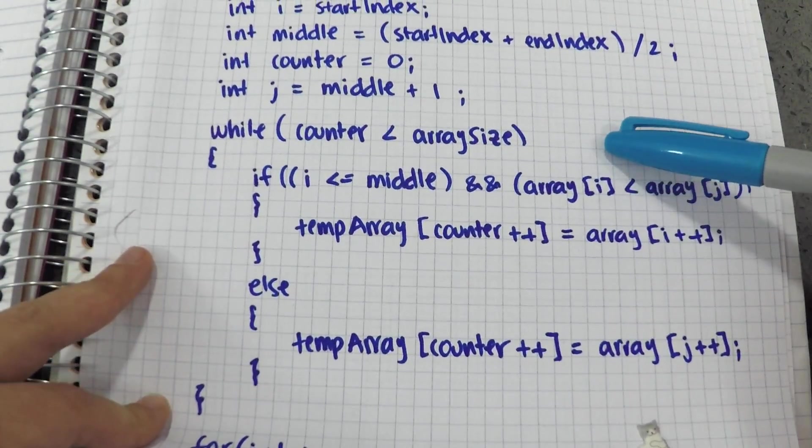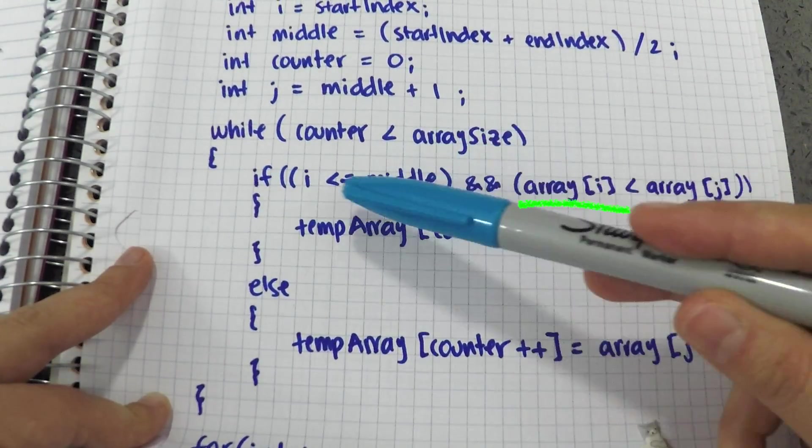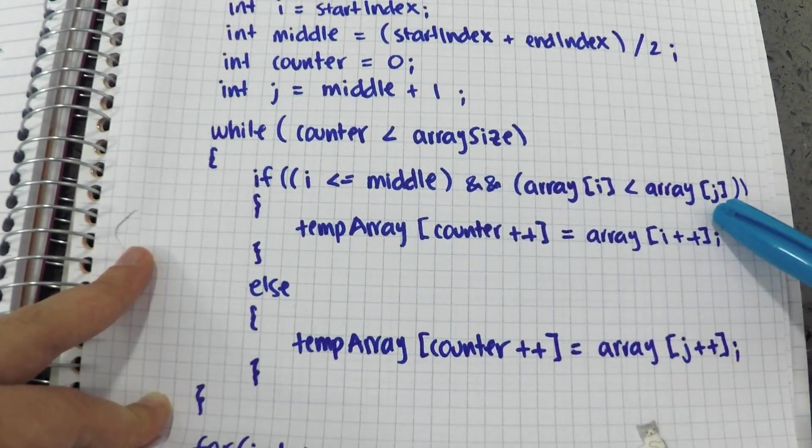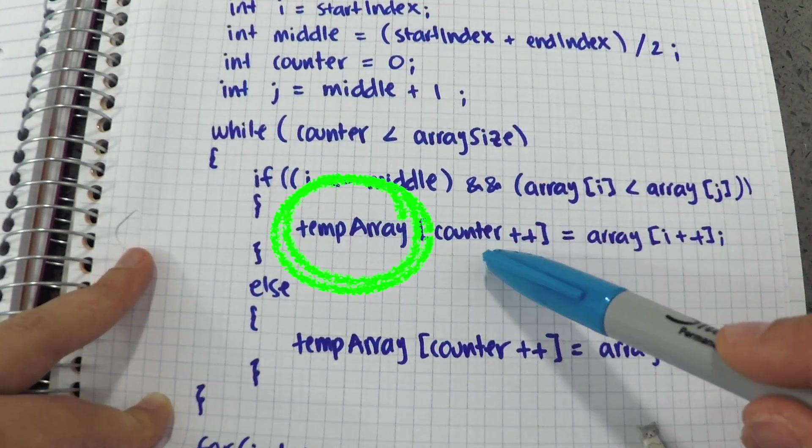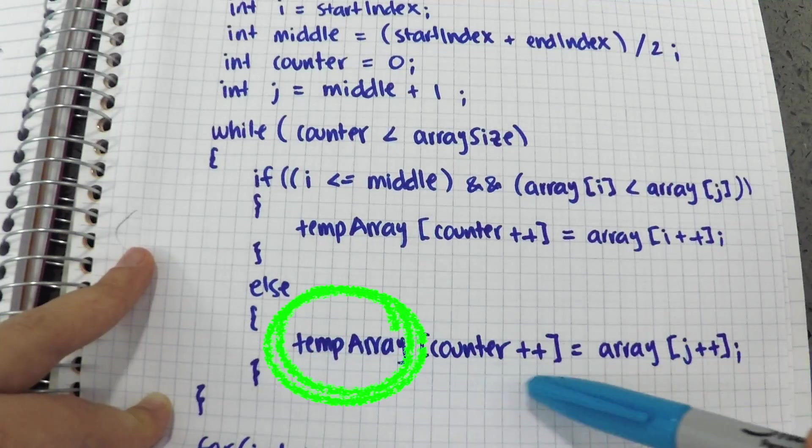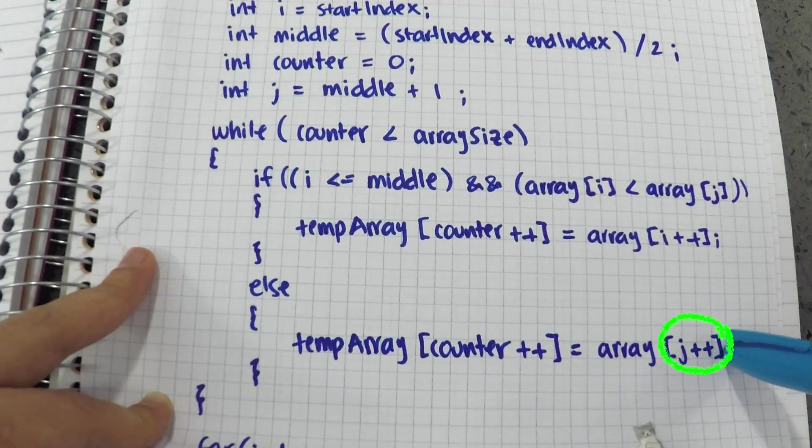In the while loop, I iterate through the array to sort it. If the element in i is less than the element in j, then I save the element in the temporary array and increment the i. Else, I still save the element in the temporary array and increment the j index.